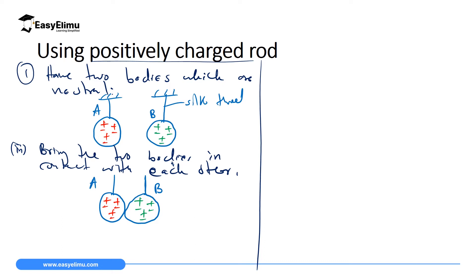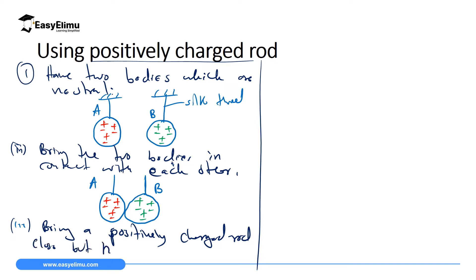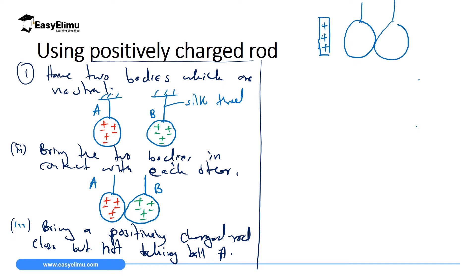The third procedure: bring a positively charged rod close to but not touching ball A. Draw a diagram to represent this — you have a positively charged rod on one side, with the two bodies in contact, ball A close to the rod and ball B on the far side. Remember the charges on the charging rod will attract opposite charges from the balls.